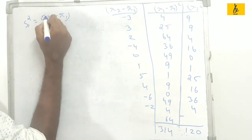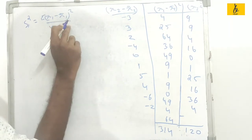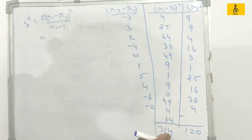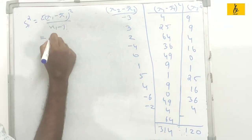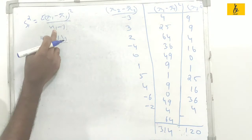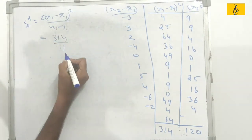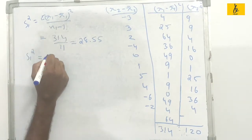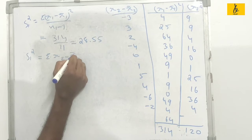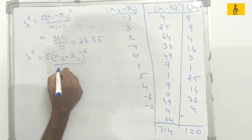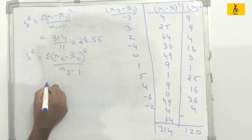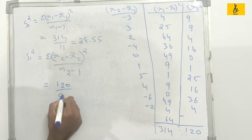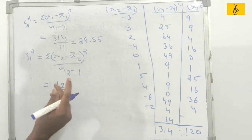S1 square equals sigma x1 minus x1 bar whole square divided by n1 minus 1 equals 114 divided by n1 minus 1. S2 square equals sigma x2 minus x2 bar whole square divided by n2 minus 1, which is 90 divided by n2 minus 1, approximately 9.